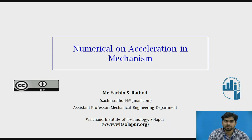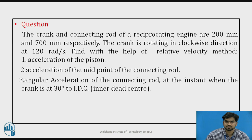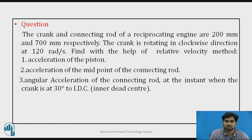Today we will deal with numericals on acceleration in mechanism. The learning outcome of this session is that students will be able to calculate the acceleration of a particular link. The question is: the crank and connecting rod of a reciprocating engine are 200 mm and 700 mm respectively. The crank is rotating in the clockwise direction at 120 radian per second. Find, using the relative velocity method: first, acceleration of the piston; second, acceleration of the midpoint of the connecting rod; third, angular acceleration of the connecting rod at the instant when the crank is at 30 degrees to the IDC, inner dead center.